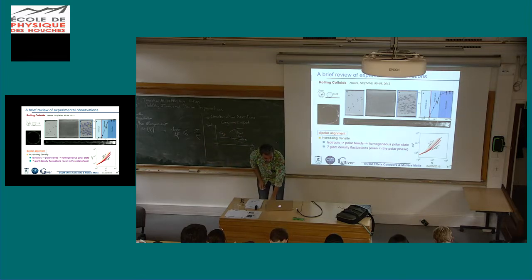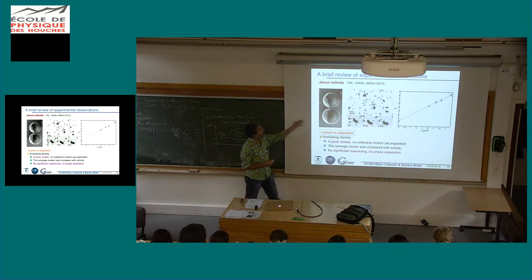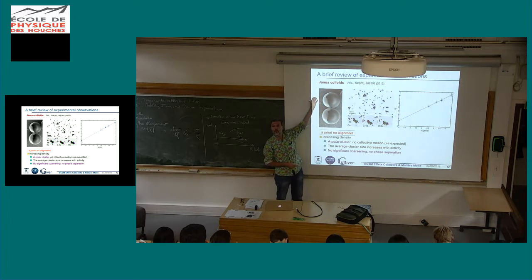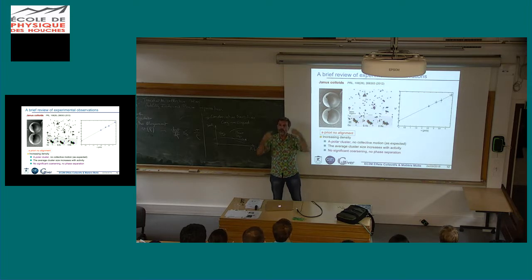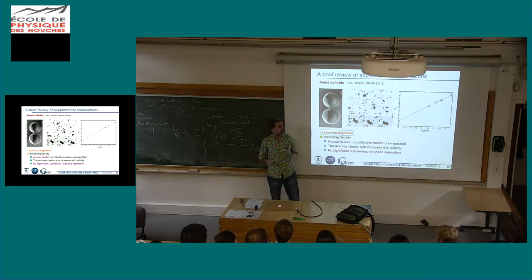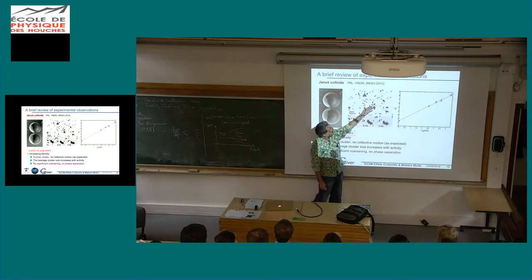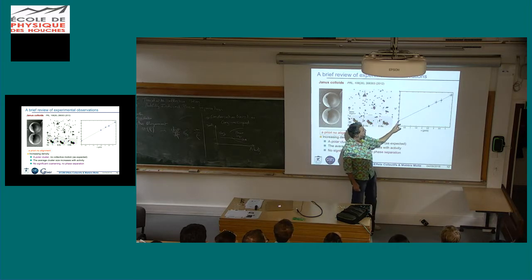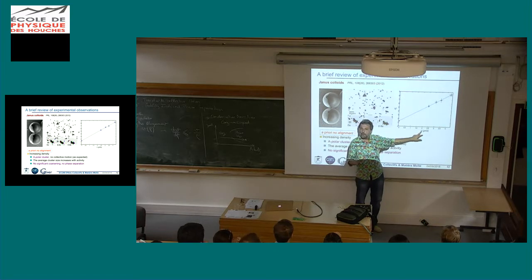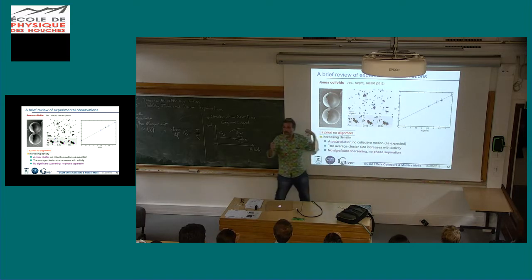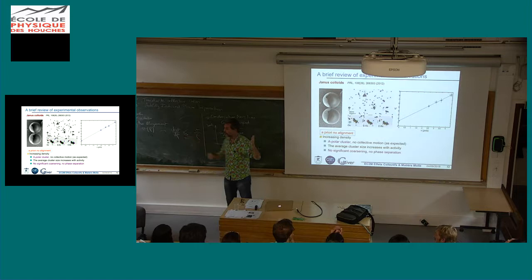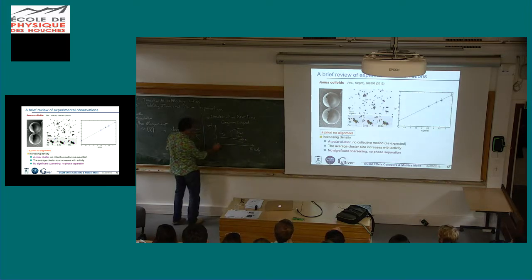Another example: Janus particles propelled by a phoretic effect — coated with platinum in an H₂O₂ solution. The platinum dissociates H₂O₂ into H₂O and oxygen, creating concentration gradients that induce phoretic flows and motion. These are spheres so a priori they don't align, and they do form clusters, but the clusters never grow very large. The cluster size depends on particle velocity, so formation is activity-related, but one never sees a nice coarsening to a true motility-induced phase separation.